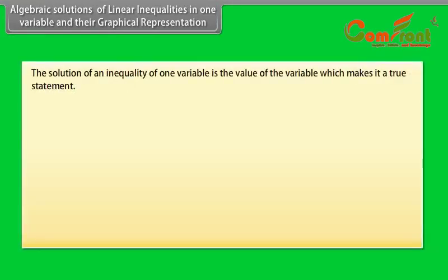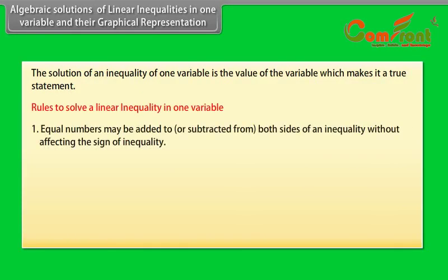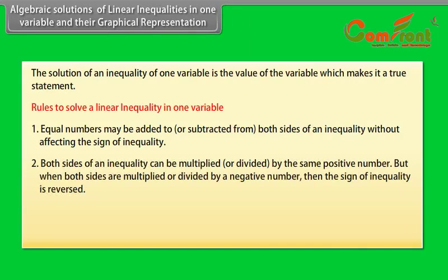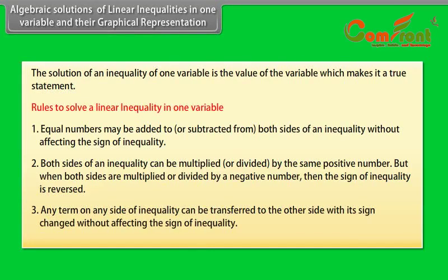Algebraic solution of linear inequalities in one variable and their graphical representation. The solution of an inequality of one variable is the value of the variable which makes it a true statement. Rules to solve a linear inequality in one variable: Rule 1 — Equal numbers may be added to or subtracted from both sides of an inequality without affecting the sign of inequality. Rule 2 — Both sides of an inequality can be multiplied or divided by the same positive number, but when both sides are multiplied or divided by a negative number, then the sign of inequality is reversed. Rule 3 — Any term on any side of inequality can be transferred to the other side with its sign changed without affecting the sign of inequality.